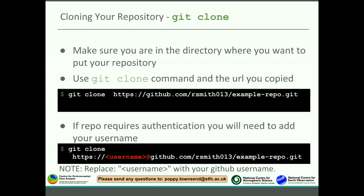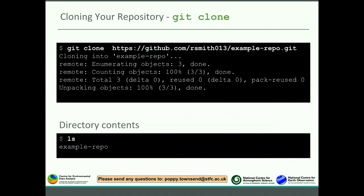Sometimes you may find a repository that requires authentication. If that is the case, you can put your GitHub username just before github.com, between the 'https://' part, and that will require your password once you press enter. When you do git clone and press return, you'll get some text on the screen. Just know that if it says 'done', that's a good thing. If you type 'ls' to list what's in your directory, you should see your repository name there — it creates a directory with the repository name wherever you are.